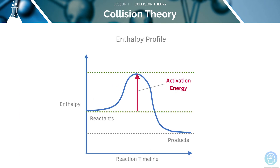This figure represents an example of an enthalpy profile diagram. It represents the activation energy as a sort of barrier, as shown here. According to this diagram, the products are at a lower enthalpy level than the reactants, suggesting that this reaction releases energy.